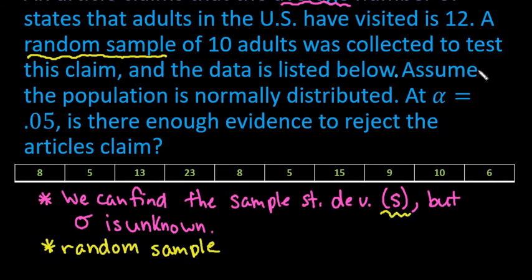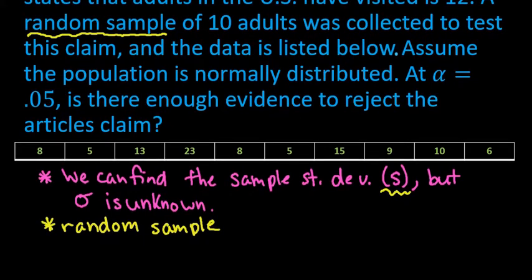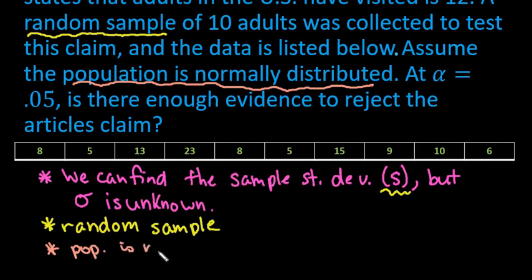And then the last thing that we need is we need to either have a sample size that is greater than or equal to 30 in order for the central limit theorem to kick in, or we have to have that the population is normally distributed. So since it says the population is normally distributed or we can assume that, we can go ahead and continue.